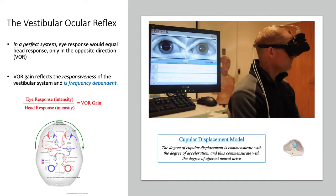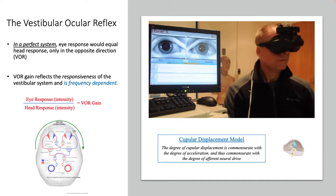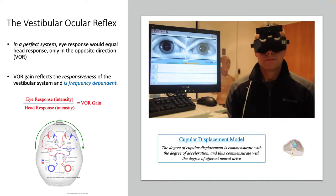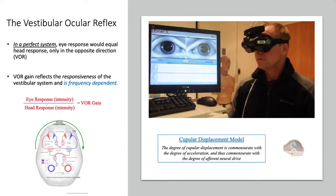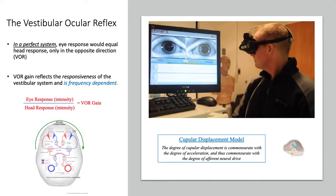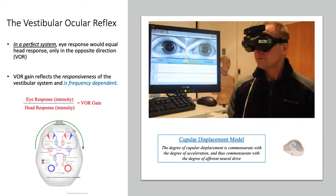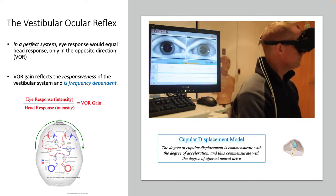As I turn my head to the right, you'll see I generate a right VOR. As I move my head to the left, I'll generate a leftward VOR, or leftward nystagmus.